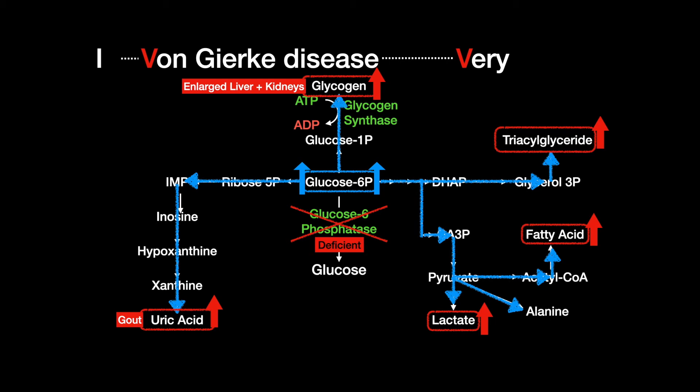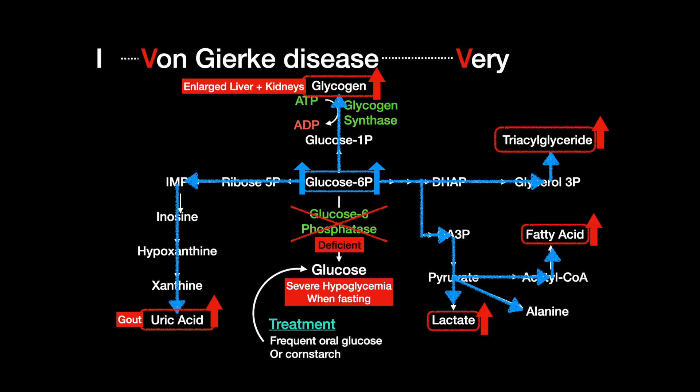The liver will be unable to regulate blood glucose, and thus during periods of fasting there will be severe hypoglycemia. The treatment for Von Gierke type 1 storage disease is having frequent oral glucose and cornstarch, and avoiding fructose and galactose.